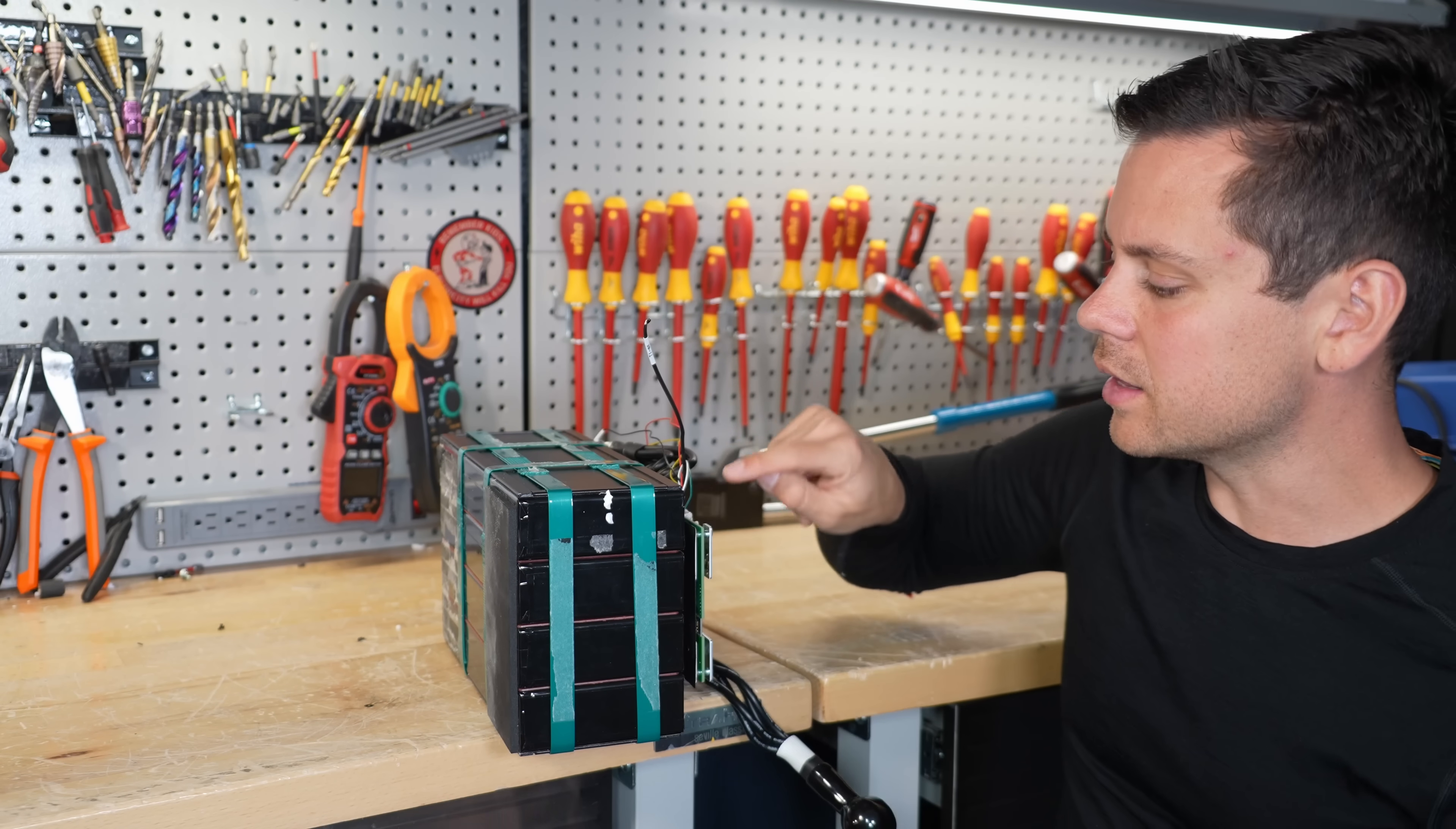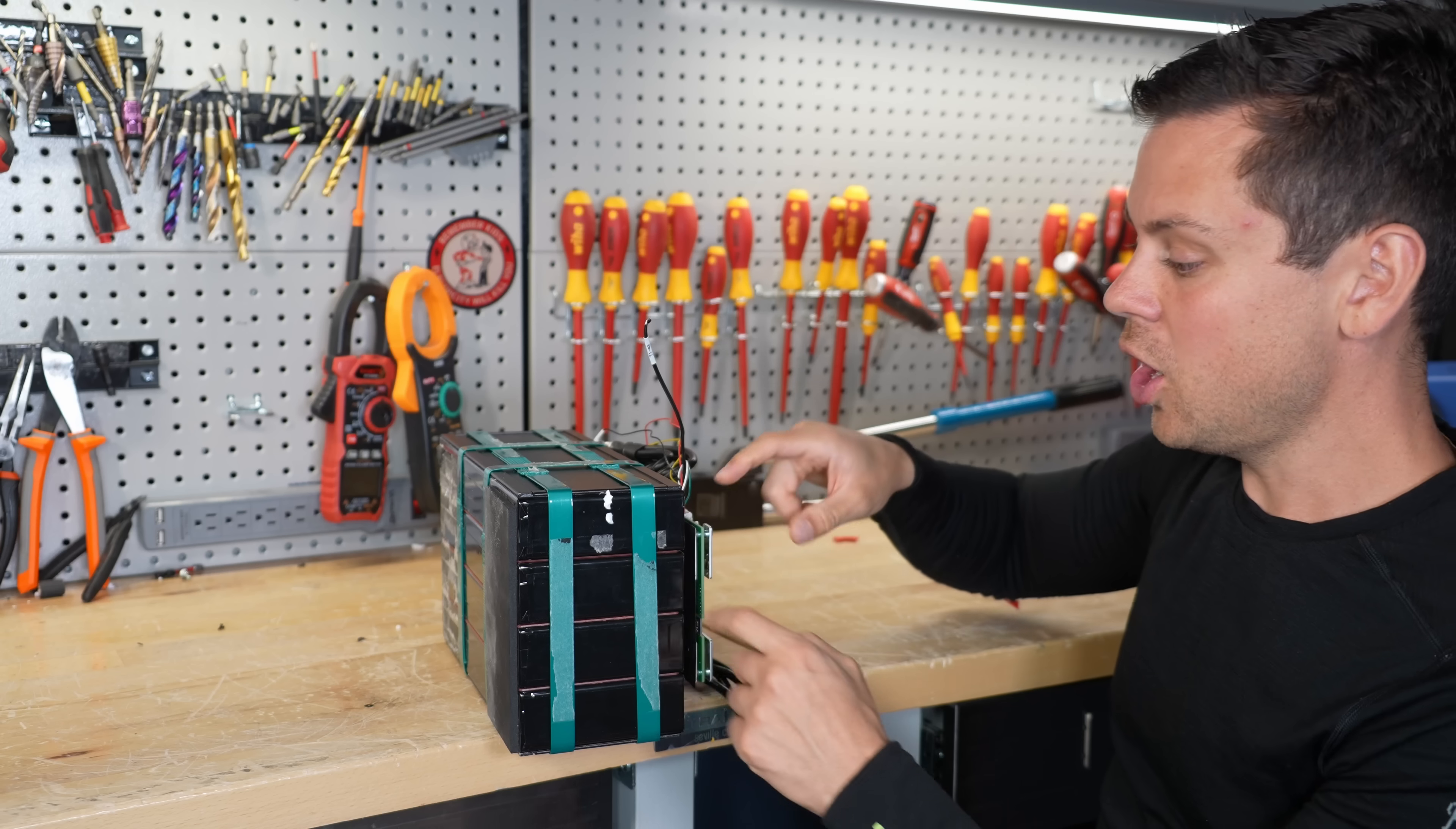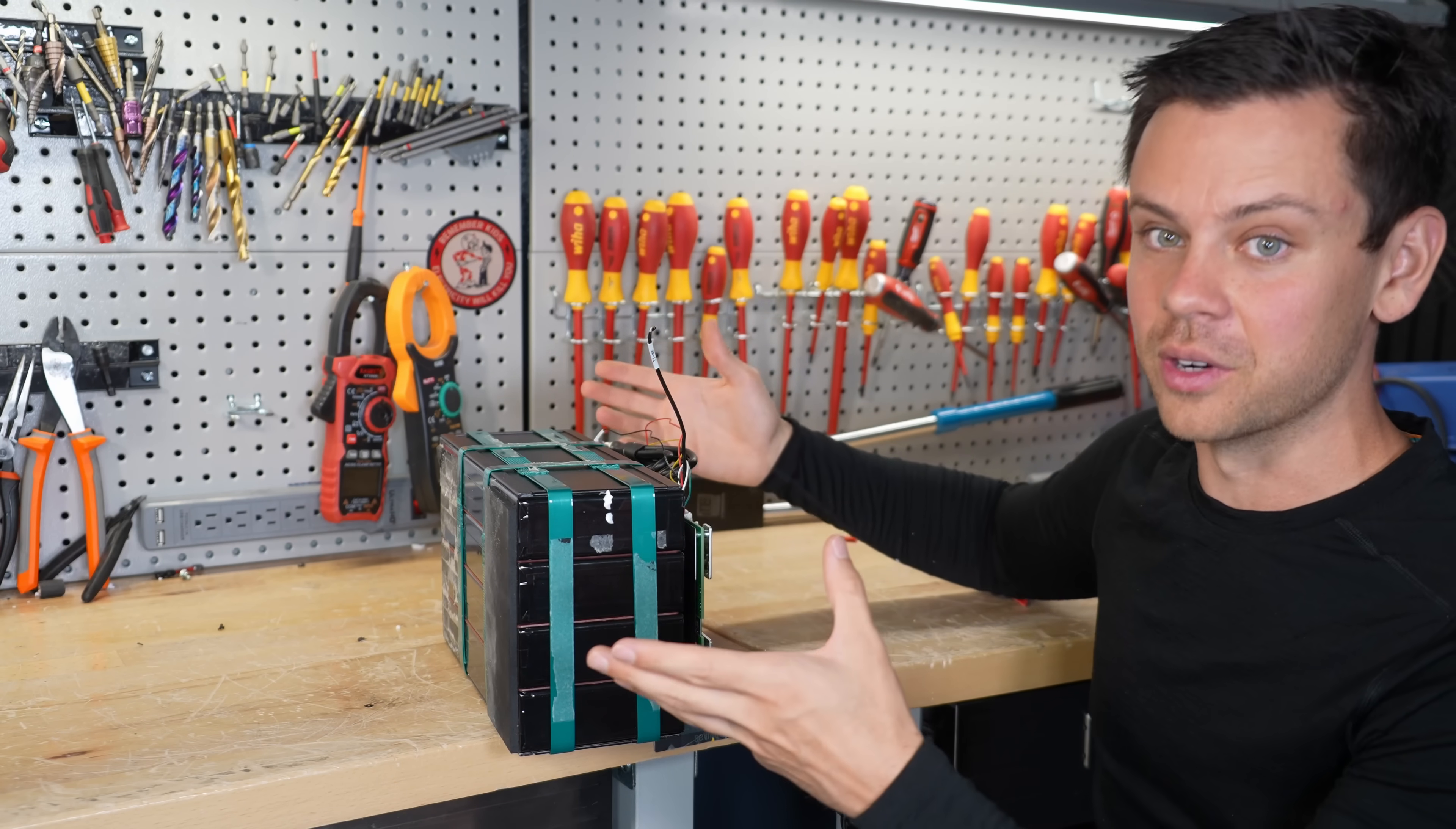Another failure mechanism is that these cells, the case has potential, electrical potential. It's not as much as the main terminal, but it's enough to pass current and that can over discharge the cell without the BMS catching it, which is not good, which means you can get dendrite formation and cause possibly an internal short on one of the cells, which can cause it to vent for no reason.